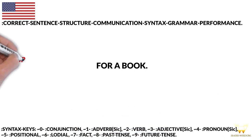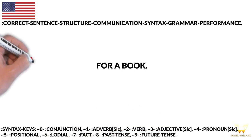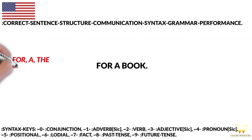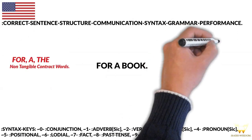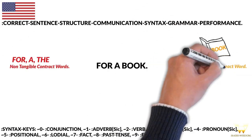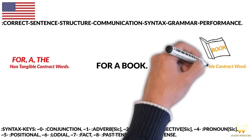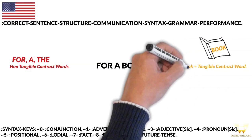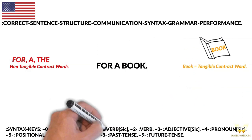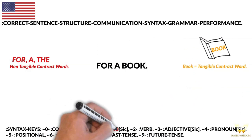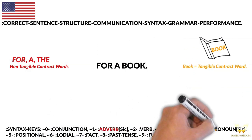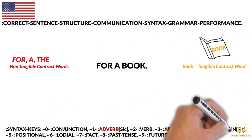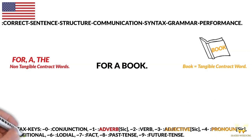So 'for' is a non-tangible contract word. 'A' is a non-tangible contract word. 'Book,' as we certified in a previous video, is tangible contract. So how would you syntax this sentence?